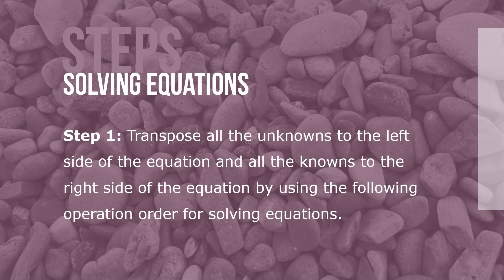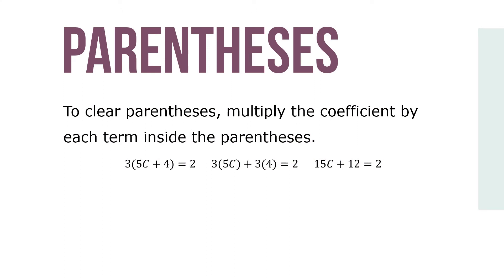Here are the steps for solving equations and proving the solution. Step 1: Transpose all the unknowns to the left side of the equation and all the knowns to the right side by using the following operation order for solving equations. Parentheses, if any, must be cleared before any other operations are performed.